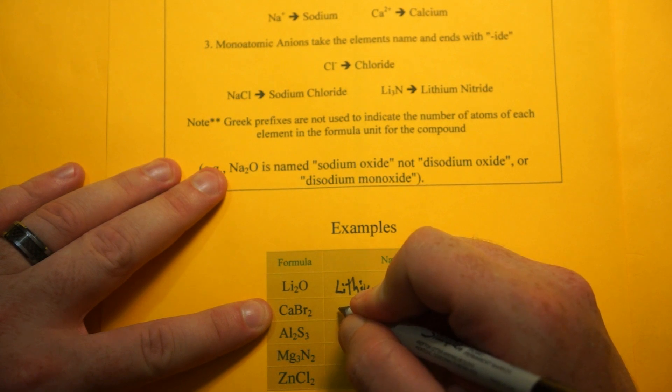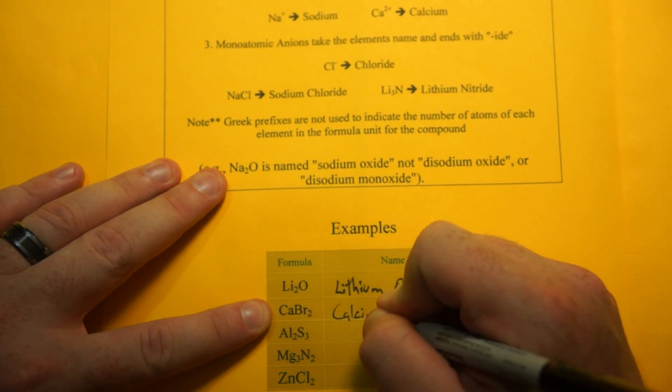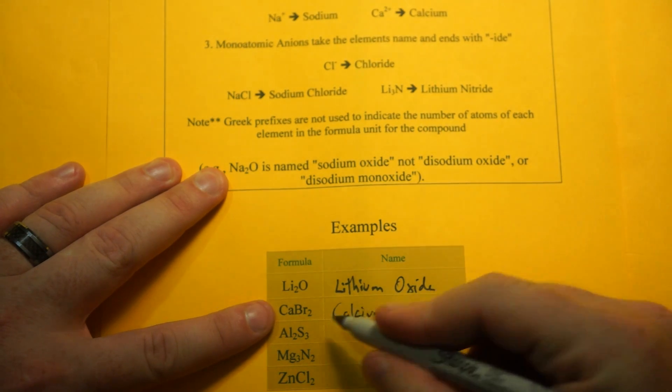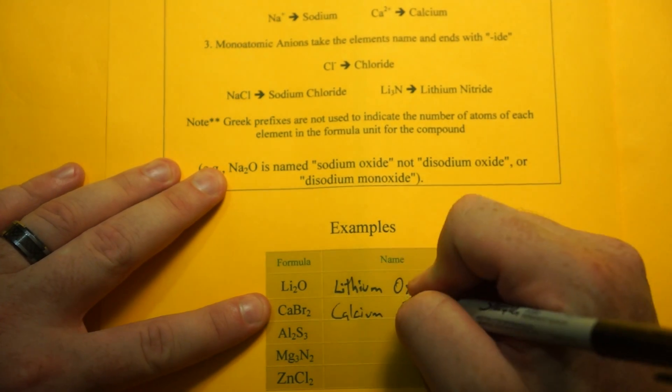CaBr2, the cation, the positive element is calcium, so you just write that, and Br is bromine, but that becomes bromide.